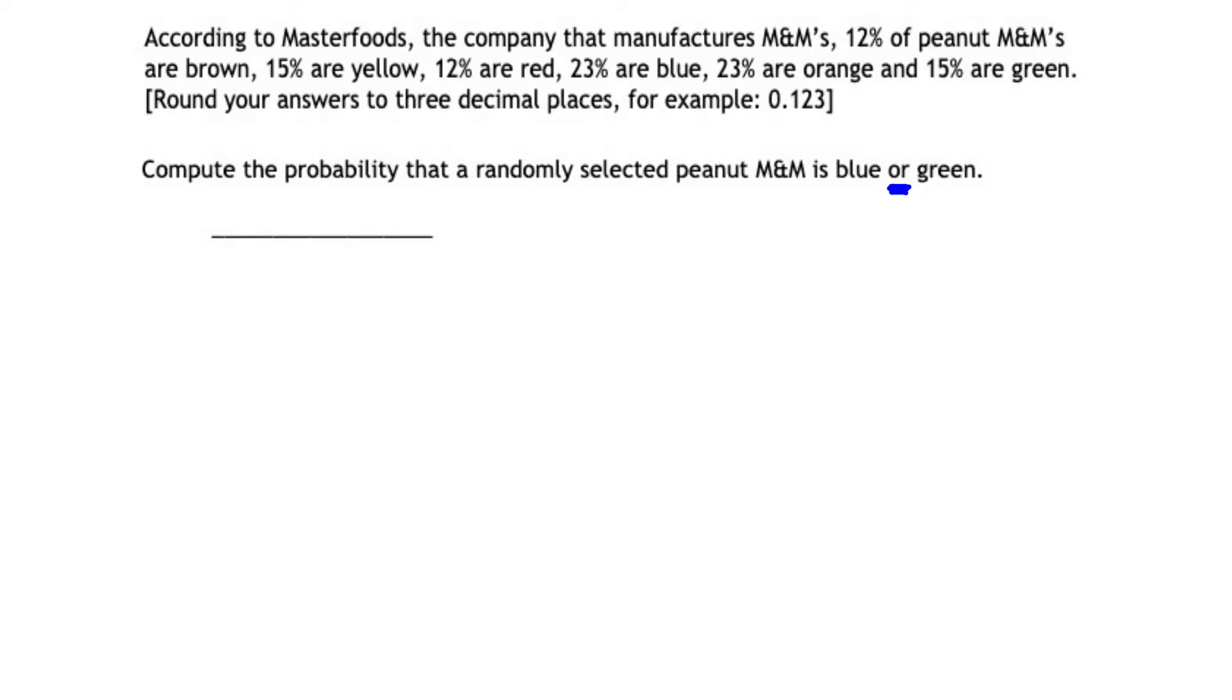We can refer to our textbook to help us out. Let's look at the rule for OR statements: the probability of A or B is equal to the probability of A plus the probability of B minus the probability of A and B occurring.